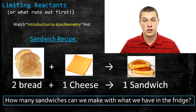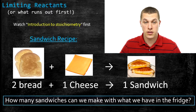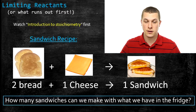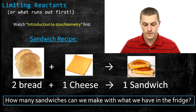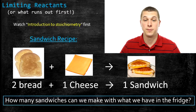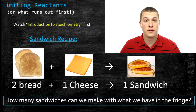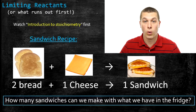What are we thinking about in this video? We're thinking about recipes, whether it's for sandwiches or chemicals. The question we want to ask ourselves is: given our recipe and the supplies we have in the kitchen or the chemistry lab, how much of that product can we make? That product could be sandwiches or chemical products.